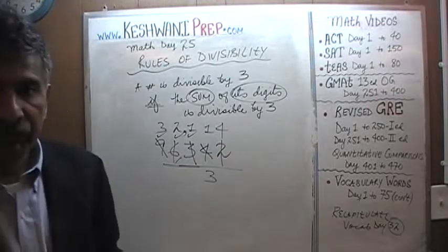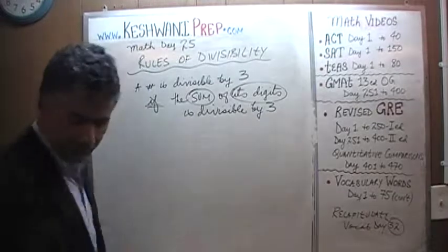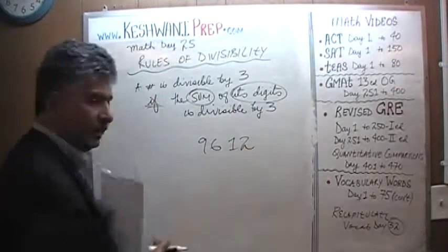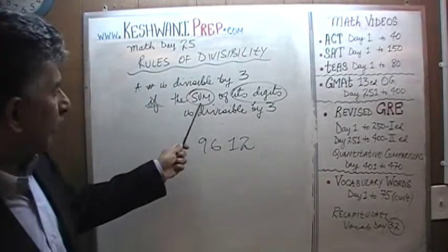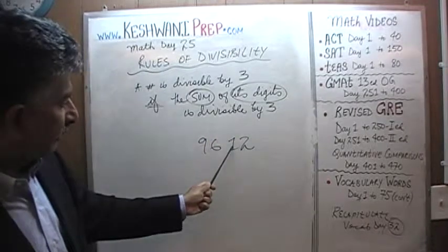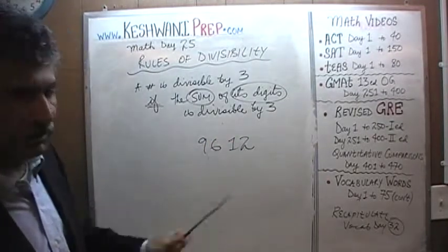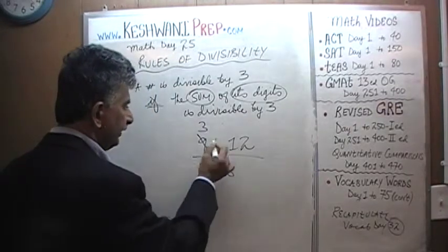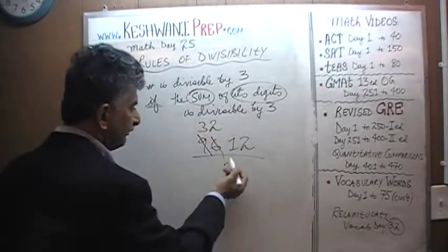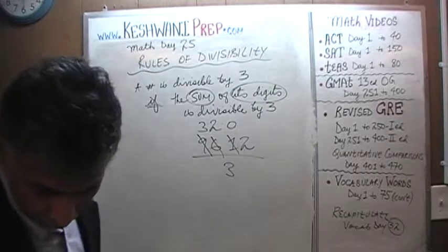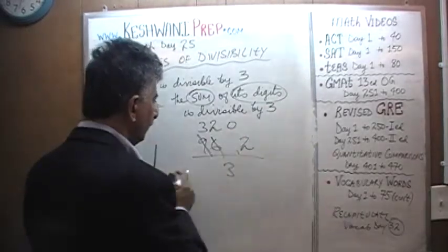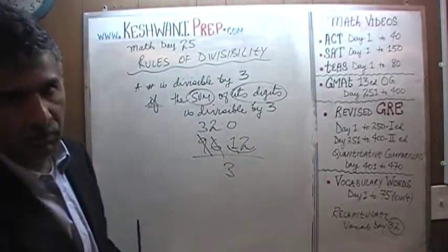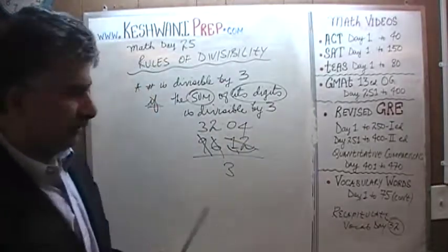That's how we tell whether or not a number is divisible by 3. For example, 9612: even though the theory says to add all digits, in practice the 9 and 6 are divisible by 3, so we just look at 1 plus 2, which is 3. Dividing: 9 has three 3s, 6 has two 3s, 1 has no 3s — that 1 joins 2 to become 12, and 12 has four 3s. So 9612 divided by 3 is 3204.